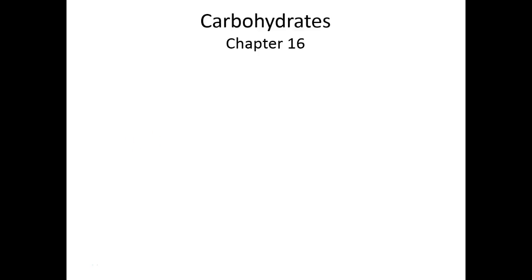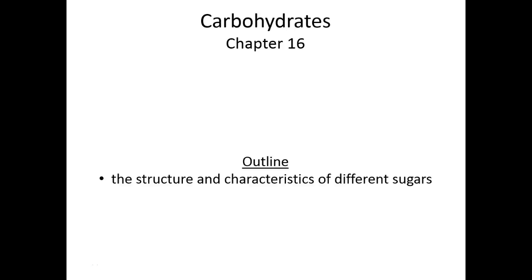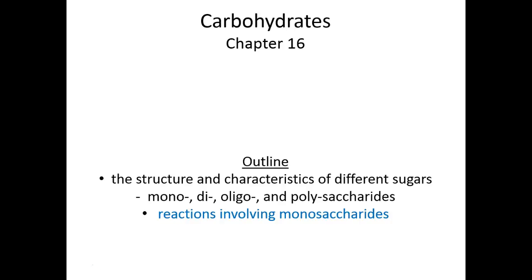Picking up right where we left off, this is the second chunk of the lecture 10 series, lecture chunk 10b. Still working through chapter 16. We've already talked a little bit about the structural and chemical characteristics of different sugars, introduced you to all of the small sugar forms — mono, di, and the oligos — and we'll start talking here about the chemistry that involves sugars.